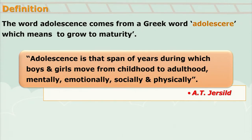According to Hurlock, adolescence is that span of years during which boys and girls move from childhood to adulthood — mentally, emotionally, socially, and physically. So the key words here are childhood to adulthood, and the dimensions we are talking about are mental, emotional, social, and physical.